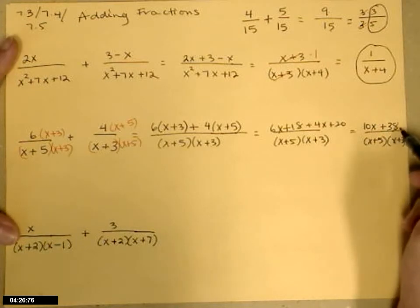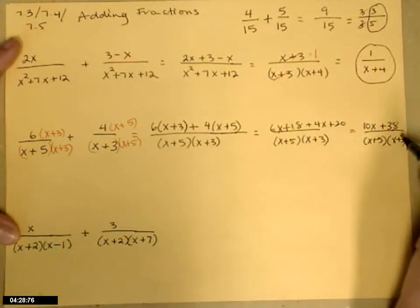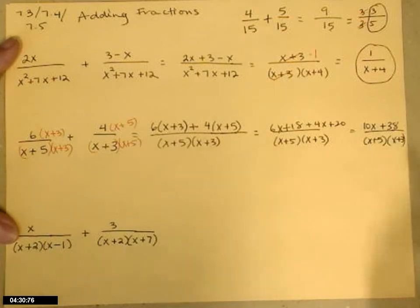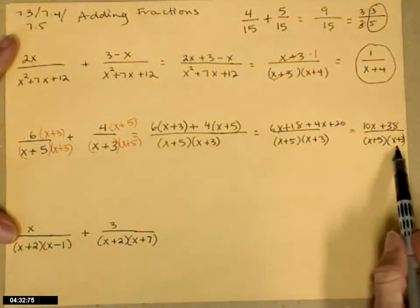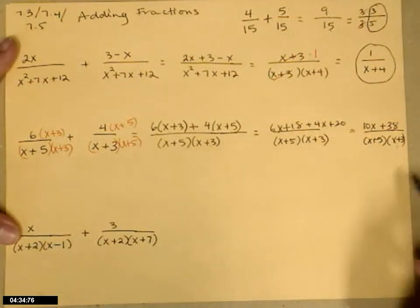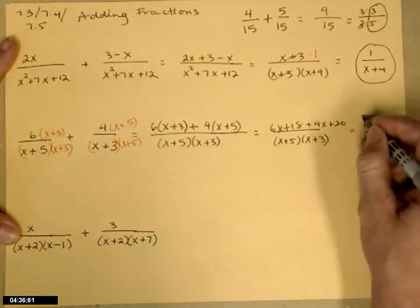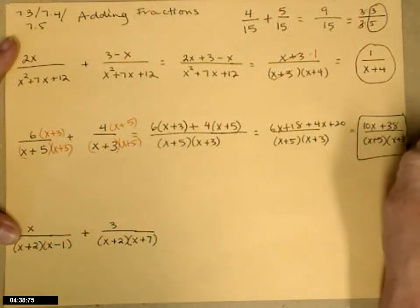When I look at that numerator, I see a common factor of 2, but if I factor out the 2, I'm not going to get left behind either x plus 5 or x plus 3. That's telling me that this does not reduce, which also tells me that I'm done.